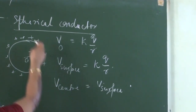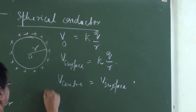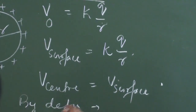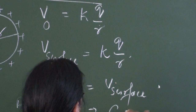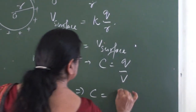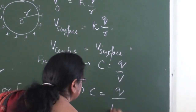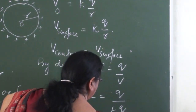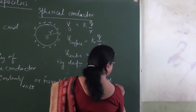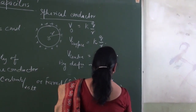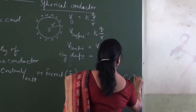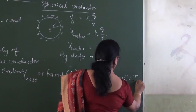Next, we will find the capacity of this spherical conductor. By definition, we can write C equal to Q by V. Hence, C is equal to Q upon KQ by R, so C is equal to R by K.